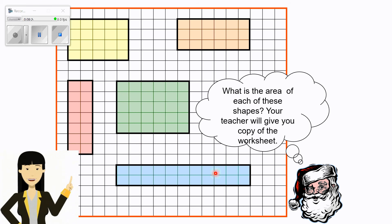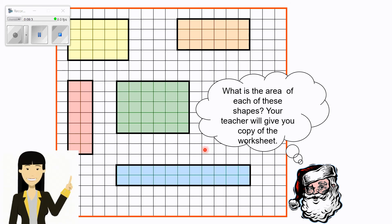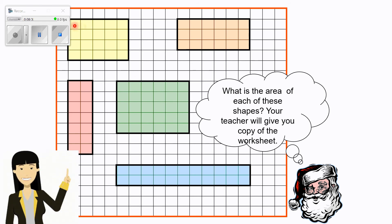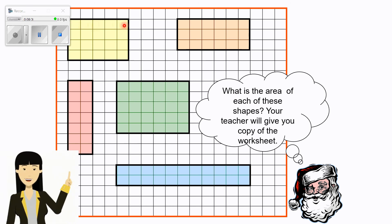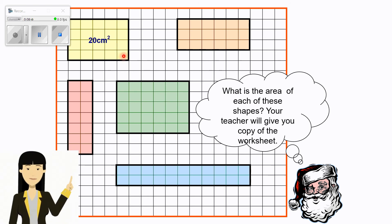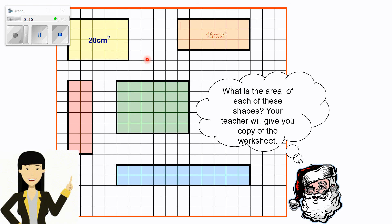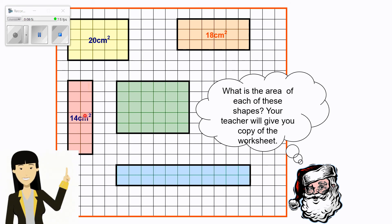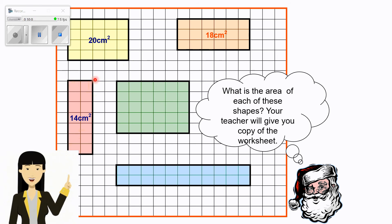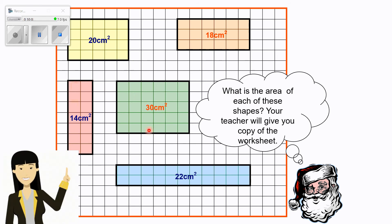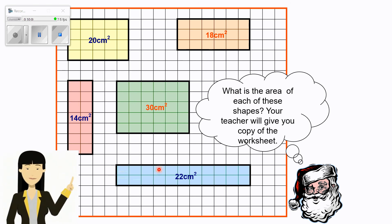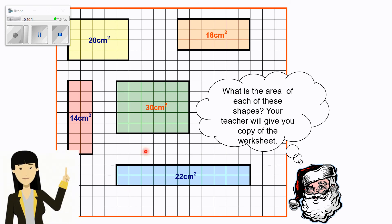Now let's look at some examples. Your teacher will give you a copy. Here: 5 times 4 equals 20 square centimeters. Here: 6 times 3 equals 18. Here it is 14 — multiply the length and width. Here is 30. And the last one: 11 times 2 equals 22 square centimeters.